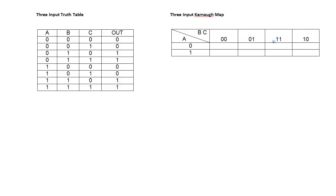We use gray code to ensure that as we move from box to box to the right, left, or down, we're only changing one bit. So this box represents A equals 0, B equals 1, C equals 1. If I move to the box to the left, A is still 0, C is still 1, but B has changed to 0. If I move to the box to the right, A is still 0, B is still 1, and C has changed to 0. And it's only A that changes if I move down.